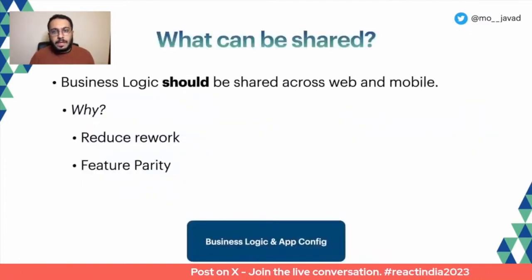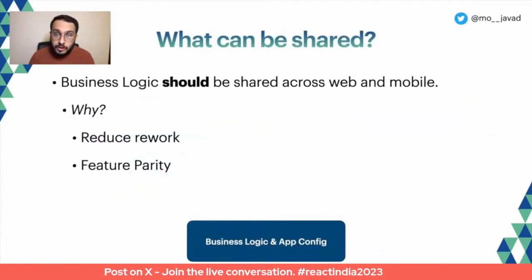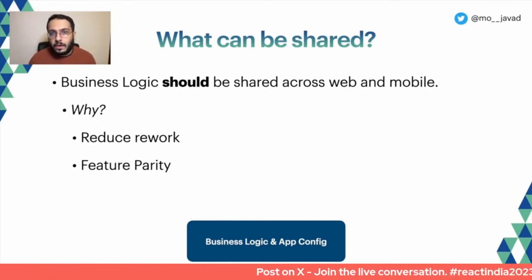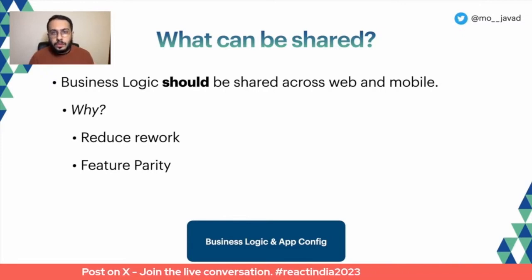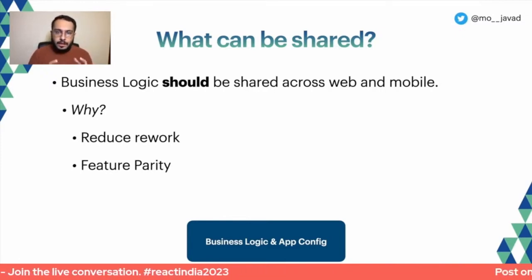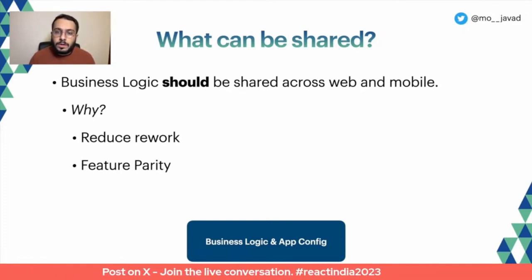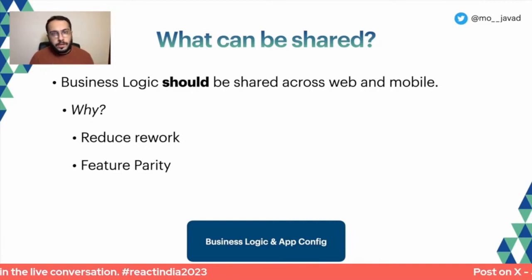I'm going to make a bold statement: you should share your business logic across web and mobile. Why? Firstly, you want to reduce rework — there's no point duplicating logic across different platforms. And more importantly, feature parity: you want to ensure your application behaves the same across all platforms so users don't have any surprises. It's really important to share business logic and keep it centralized in one place that's shared across platforms.